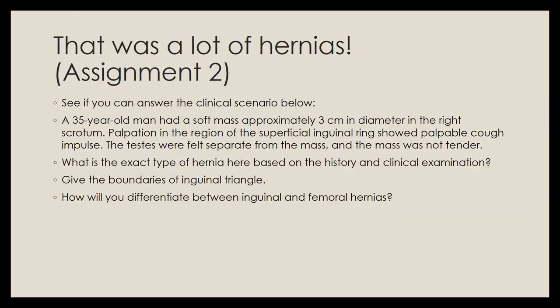Assignment 2: A 35-year-old male has a soft mass approximately 3 cm in diameter in his right scrotum. Palpation at the superficial inguinal ring shows a palpable cough impulse; the testes are felt separately from the mass, and the mass is not tender. Identify what type of hernia this is, give the boundaries of the inguinal triangle, and explain how to differentiate between inguinal and femoral hernias.